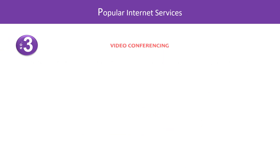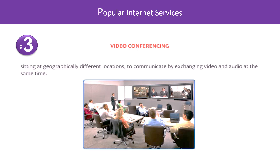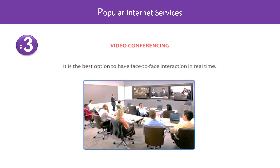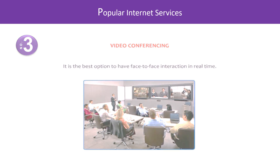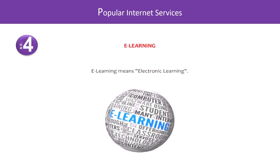Number three: Video Conferencing. A video conference can be described as a phone call with pictures that allows multiple people sitting at geographically different locations to communicate by exchanging video and audio at the same time. It is the best option to have face-to-face interaction in real time.